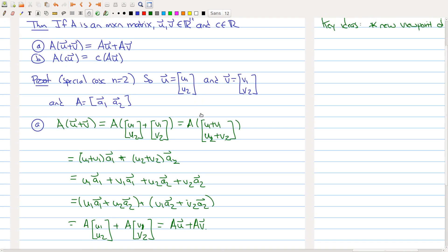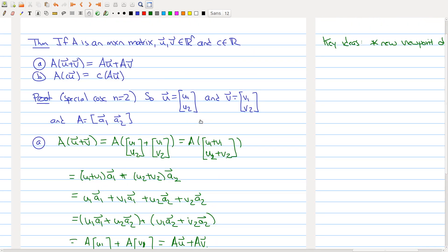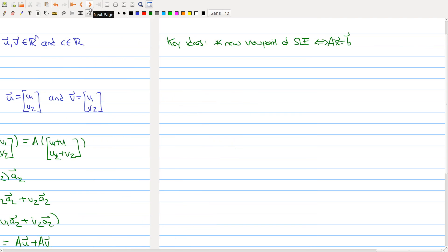So we'll see this theorem pop up again in a couple of lectures, but it's a nice property to know about matrix multiplication by a vector. So there are a bunch of things that we learned today. One of the things that you should take away from today's lecture is a new viewpoint on systems of linear equations. So in particular, you now can write a system of linear equations as a matrix equation. You're taking a matrix times a vector equaling another vector.